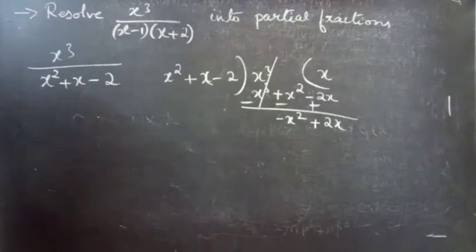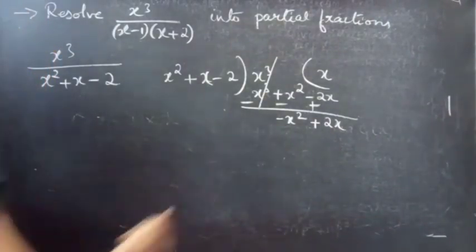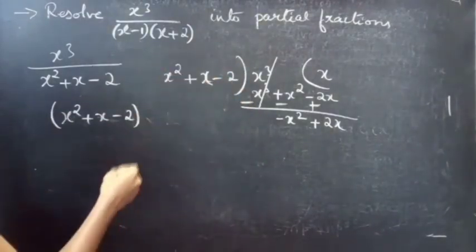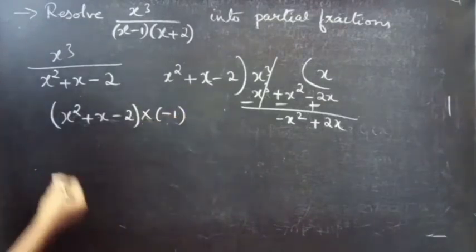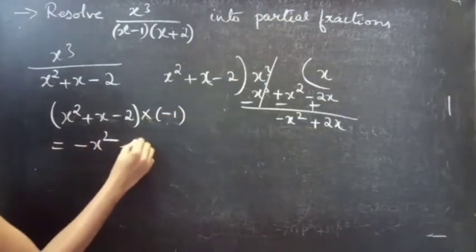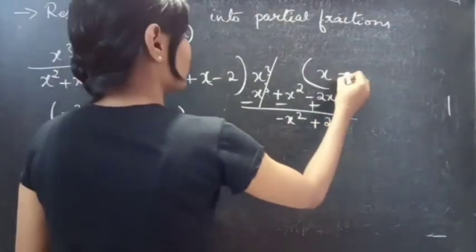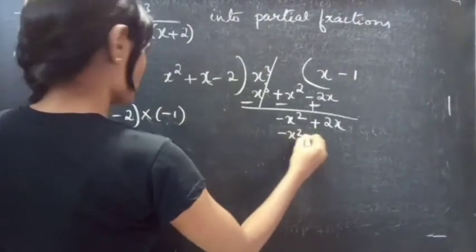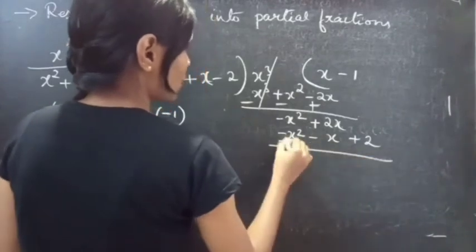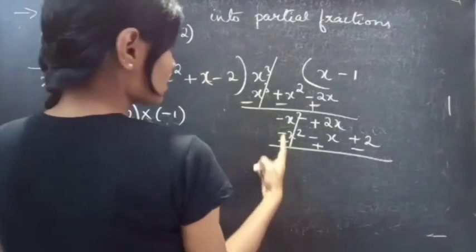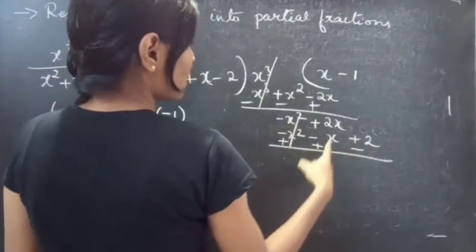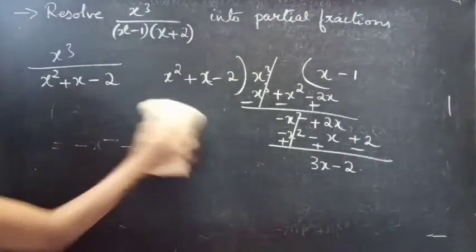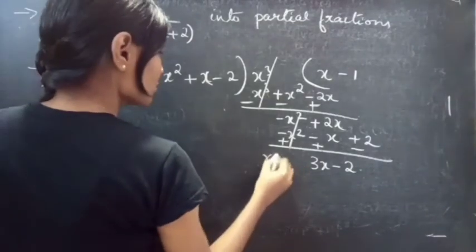Since we are having minus 2x in the first term, we multiply the divisor by minus 1 to get minus x squared minus x plus 2. Change the signs: plus x squared and minus x squared get cancelled, and there is a remainder r(x).